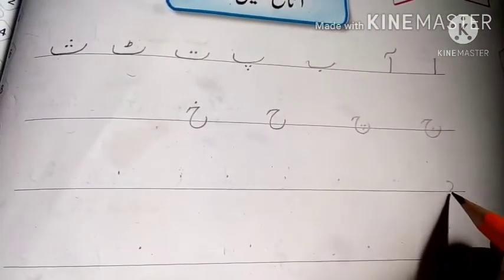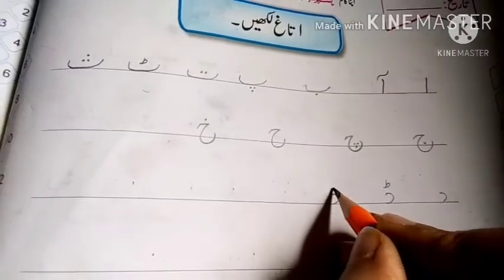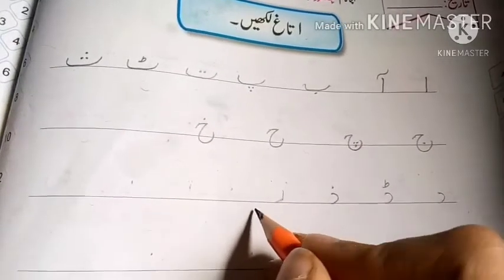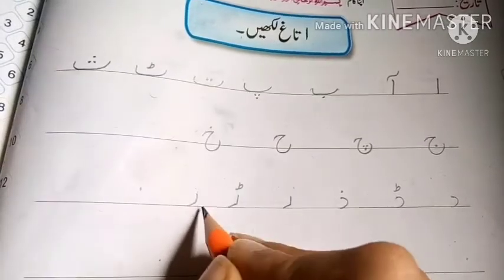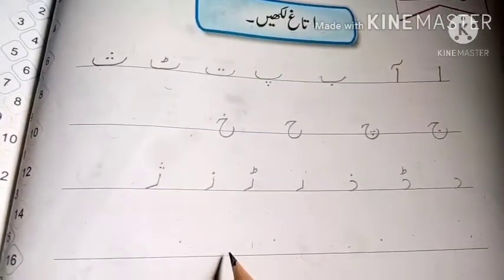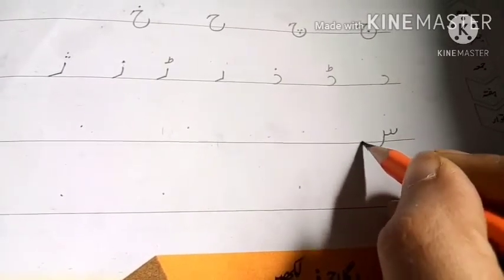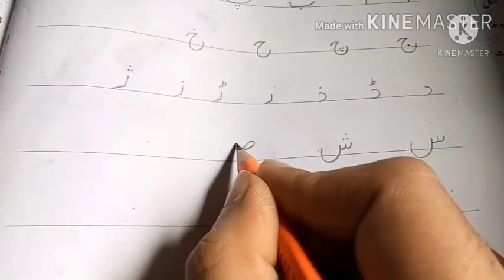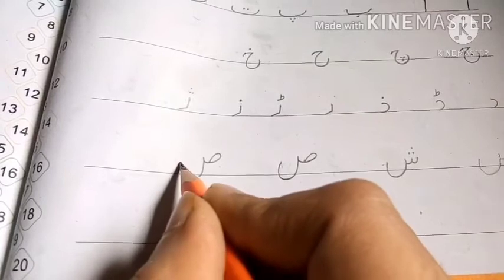Jim — jim has one nukta inside. Che — che has three nukta inside. Hay — hay has one nukta above. Dal — dal has no nukta. Zal — zal has a small toin above. Dal has one nukta. Re — re has no nukta. Zay — zay has one nukta above. Zay with three nukta above. Seen — seen has no nukta. Sheen — sheen has three nukta above. Swad — swad has no nukta. Zwad — zwad has one nukta.